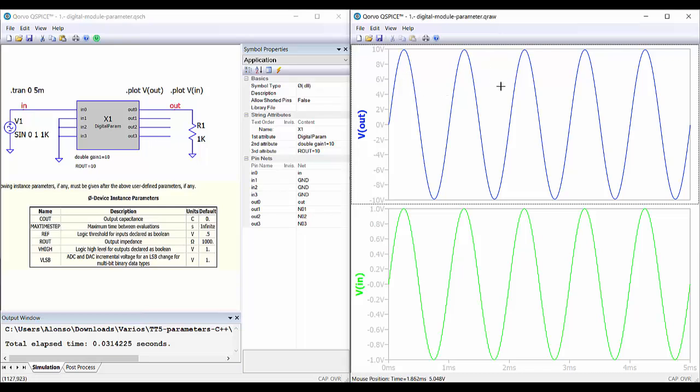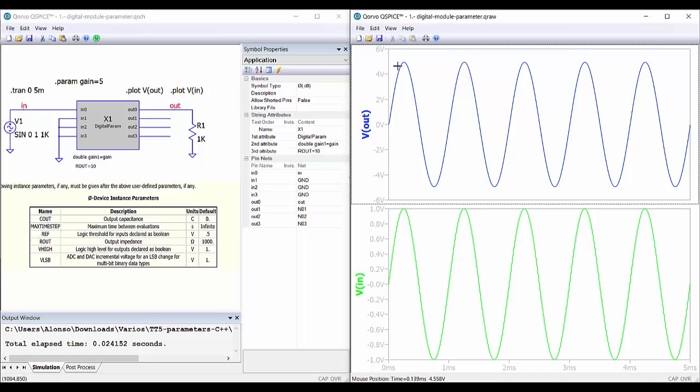Also we can pass here the value of an external parameter and then also pass the parameter to the C++ module. So we run the simulation and then we can see that now we have a gain of 5.